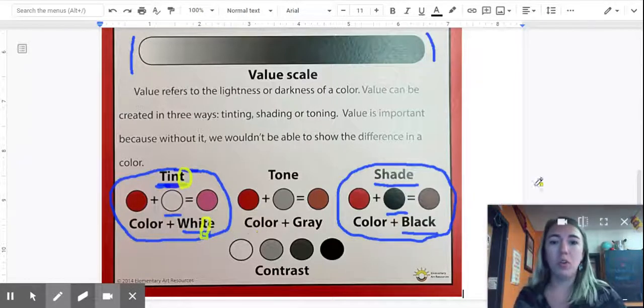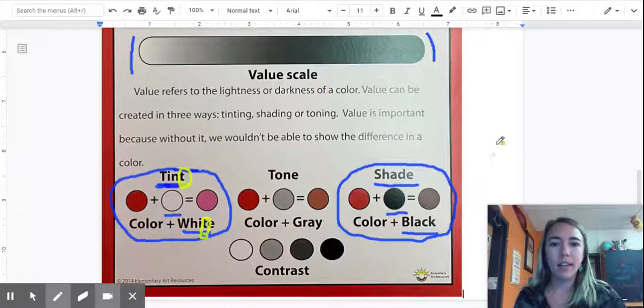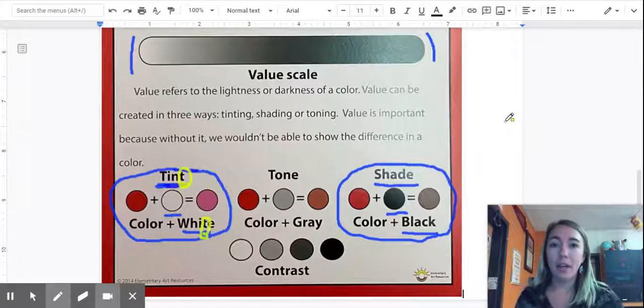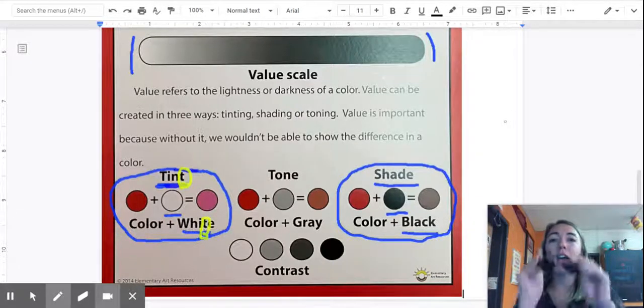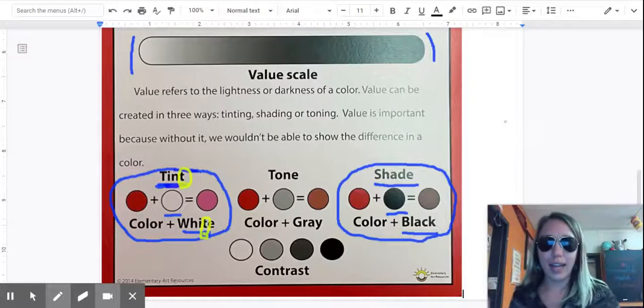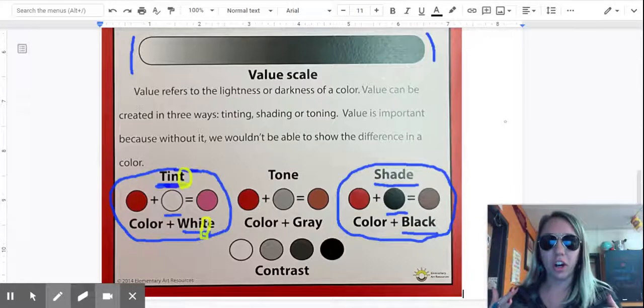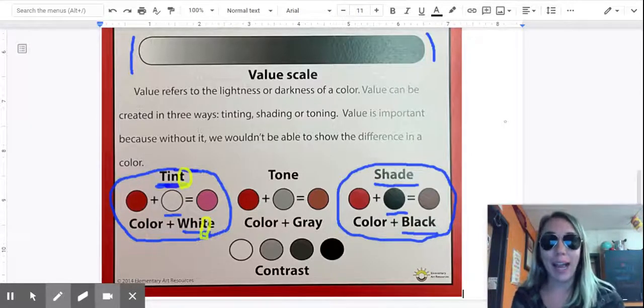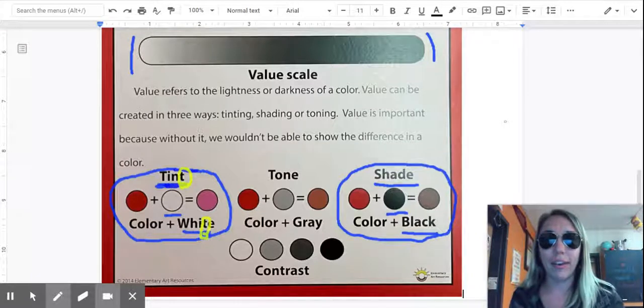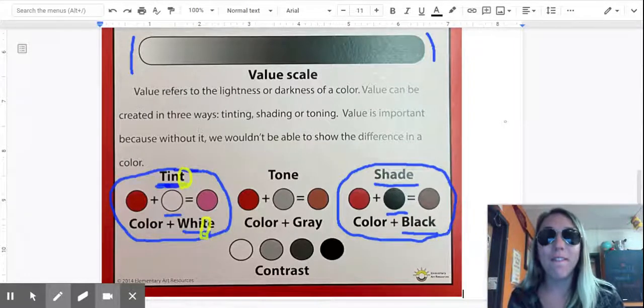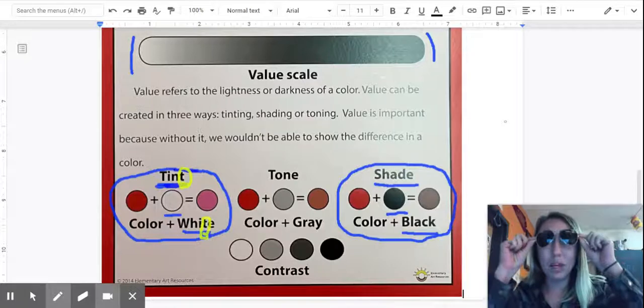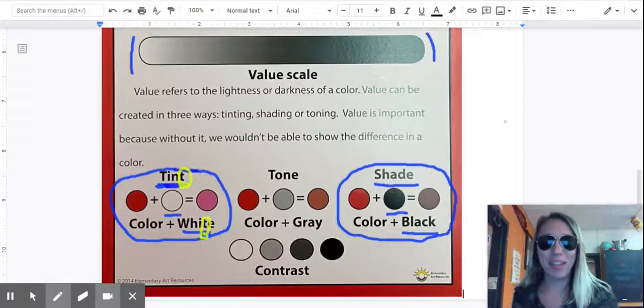Okay, a trick to remember shades. Well, if I put on a pair of shades or sunglasses, everything gets darker. So when I add black to a hue or a color, I create a darker value. So think that I put shades on something and it becomes darker.